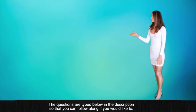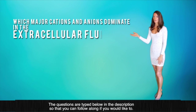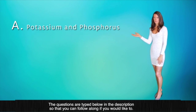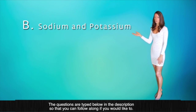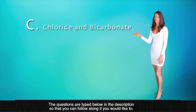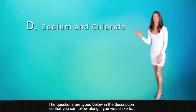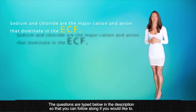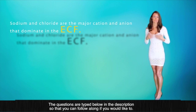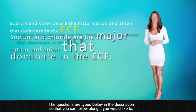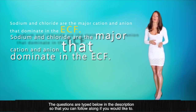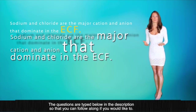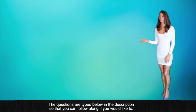Question number two: which of the major cations and anions dominate in the extracellular fluid? A, potassium and phosphorus. B, sodium and potassium. C, chloride and bicarbonate. Or D, sodium and chloride. Sodium and chloride are the major cations and anions that dominate the extracellular fluid. Potassium and phosphorus are dominant in the intracellular fluid. Sodium and potassium are cations, and chloride and bicarbonate are both anions. Making the final and correct answer option D.